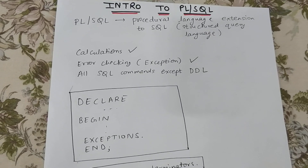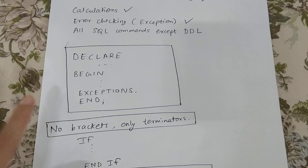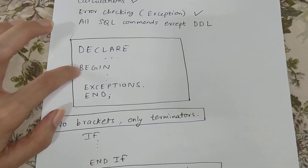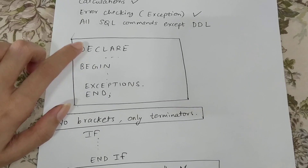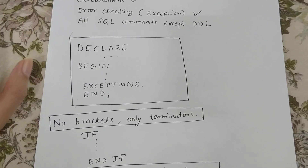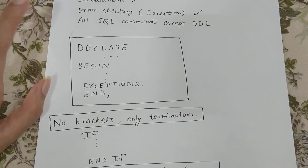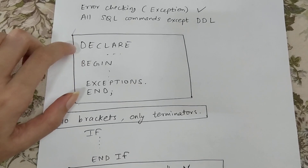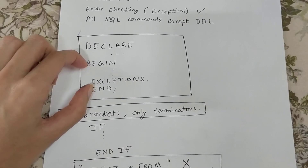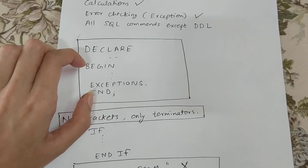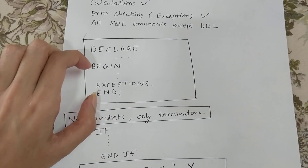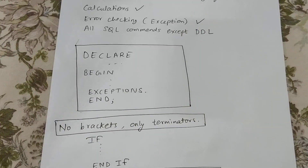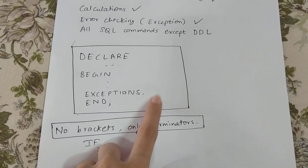A basic PL/SQL block has four sections: DECLARE, BEGIN, EXCEPTION, and END. In DECLARE we declare variables. Whatever calculations or commands we want to execute go between BEGIN and END. If there are any exceptions, we handle them in the EXCEPTION section.